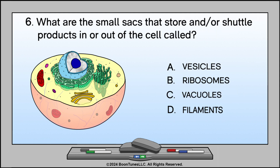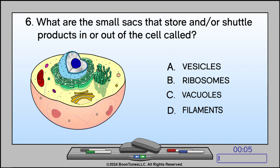What are the small sacs that store and/or shuttle products in or out of the cell called? A. Vesicles, B. Ribosomes, C. Vacuoles, or D. Filaments? The answer is A. Vesicles.